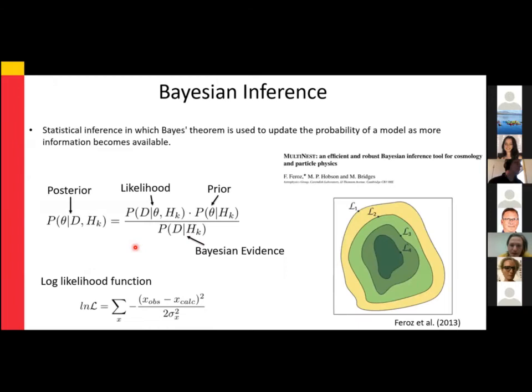We need a framework to account for all these sources of uncertainty — the intensive parameters as well as the diffusion coefficients. To do this, we use Bayesian inference, a statistical method that uses Bayes' theorem to update the probability of a model as more information becomes available.